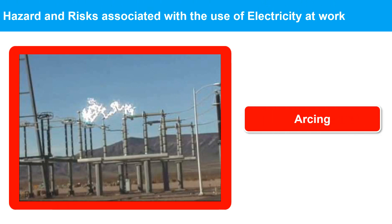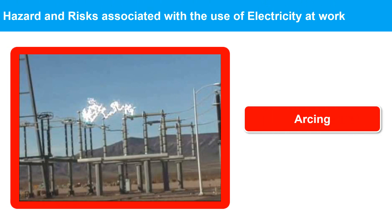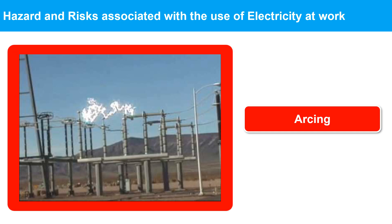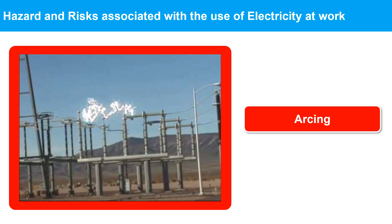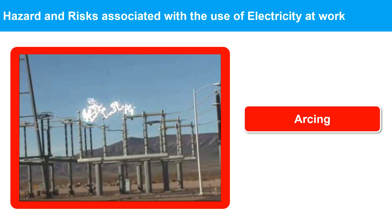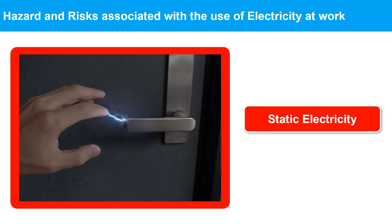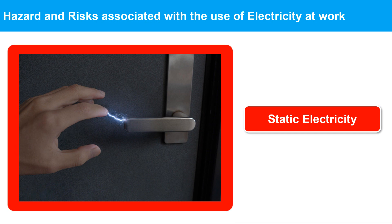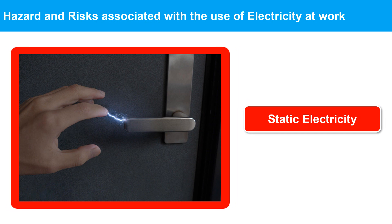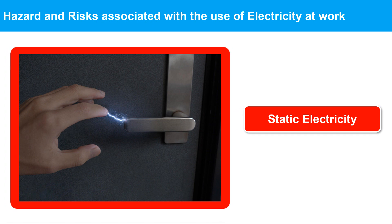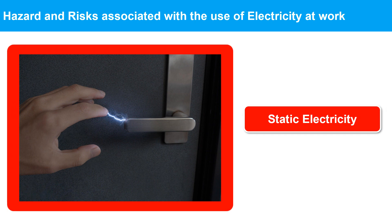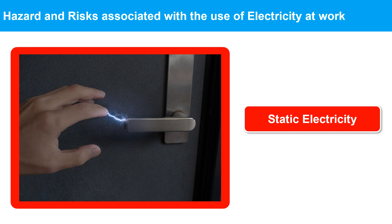Arcing is a hazardous phenomenon that can occur in electrical systems when an electric current jumps across a gap between two conductors. It can cause fires, explosions, and severe injury or death to people working with or near the electrical equipment. Static electricity is an electrical charge that builds up on the surface of an object due to friction or contact with another object. While it can be harmless, it can also be a hazard in flammable or explosive environments, where it can cause sparks and ignite fires or explosions.